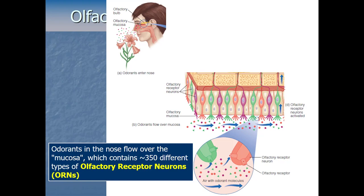These neurons are called olfactory receptor neurons, or ORNs for short. They are our detectors — the sensory neurons for olfaction where we transduce odorant molecules into neural firing signals sent to the brain. Our nose has about 350 different types of ORNs.